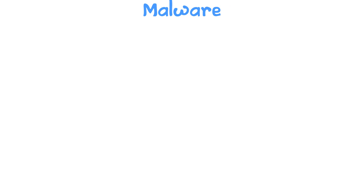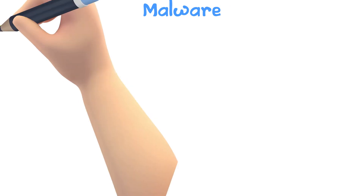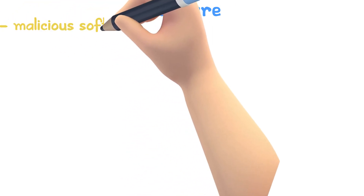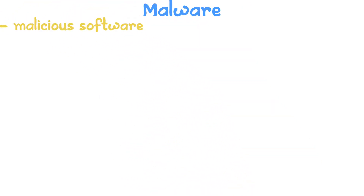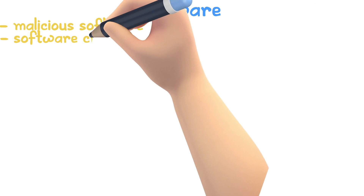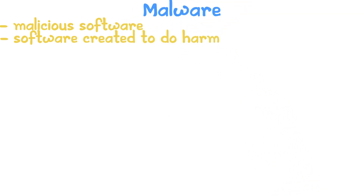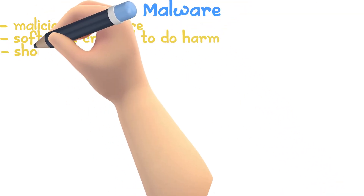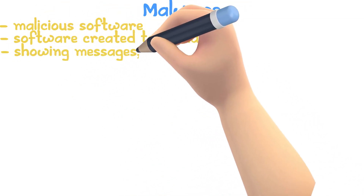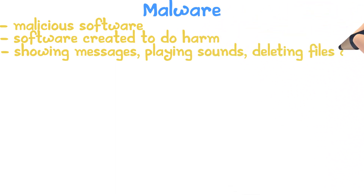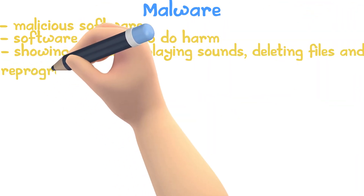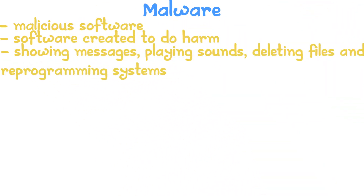Malware is shortened for malicious software. It's basically software created to do harm. The way malware does this is through showing messages, playing sounds, deleting files, or reprogramming systems.